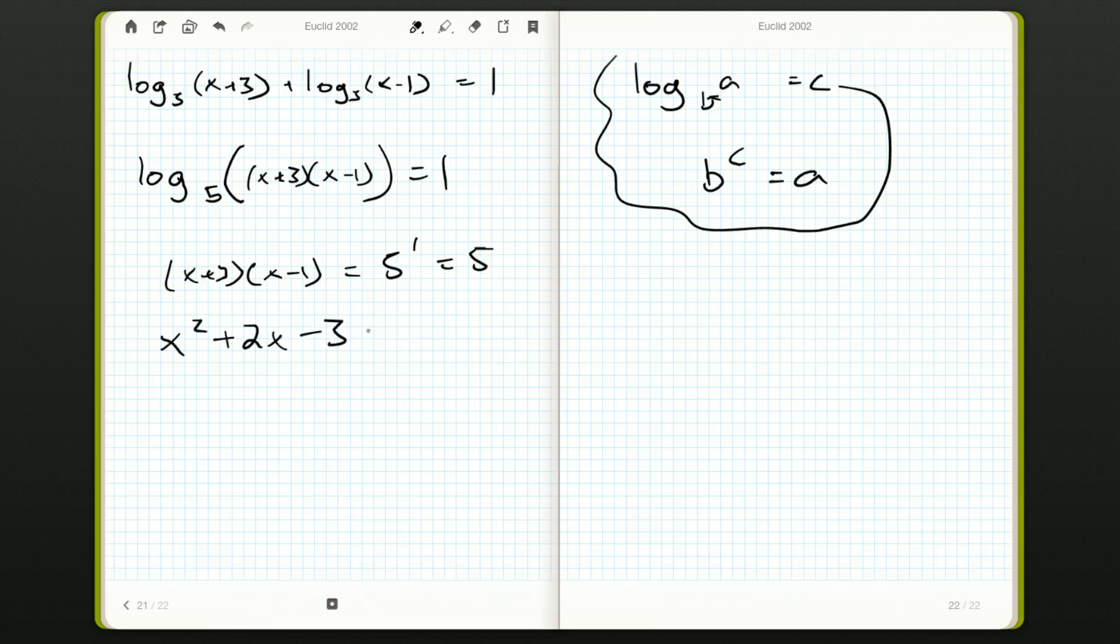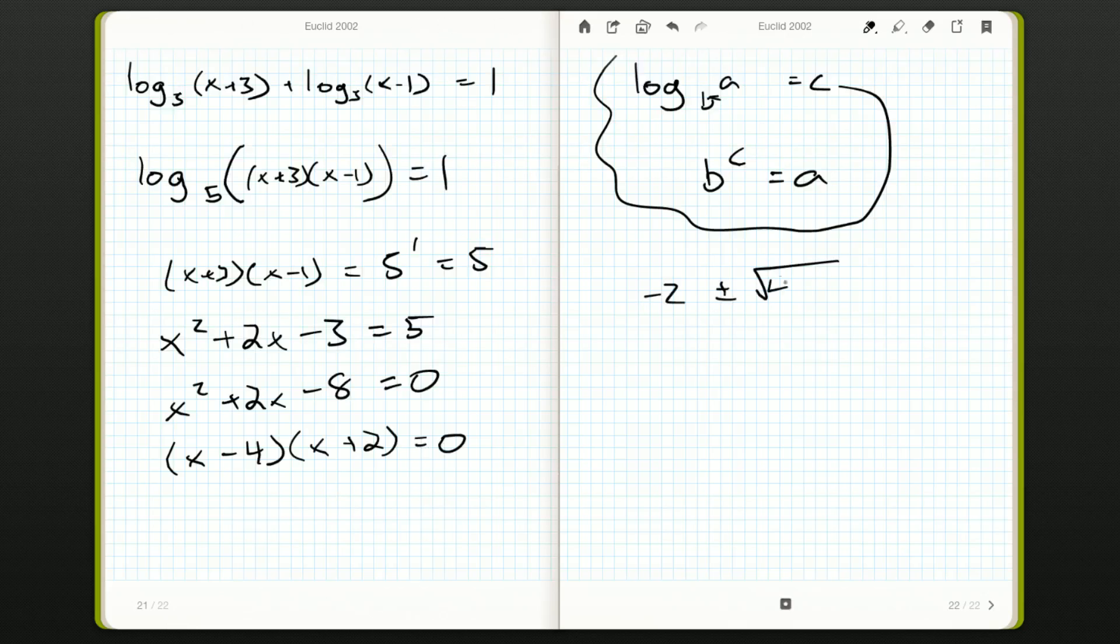Let's expand this out: x squared plus 2x minus 3. We have ourselves a good old-fashioned quadratic. Bring the 5 to the other side, we get x squared plus 2x minus 8 equals 0. If you can factor it in your head, I think you'll get something like this. Or use the quadratic formula: negative 2 plus or minus square root of 4 plus 32, that's 36, so negative 2 plus or minus 6 over 2. That'll give us 2 or negative 4. However you want to do it, that's fine.